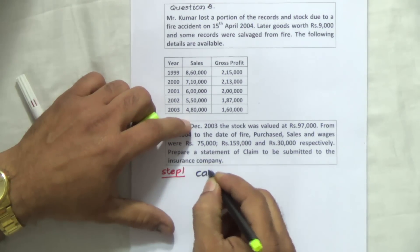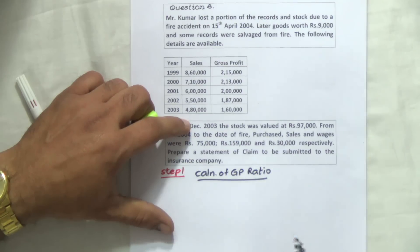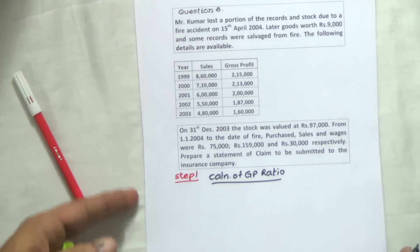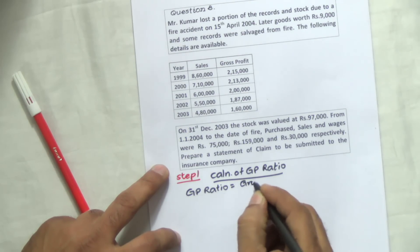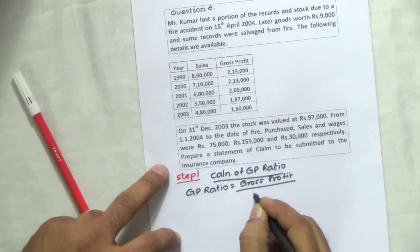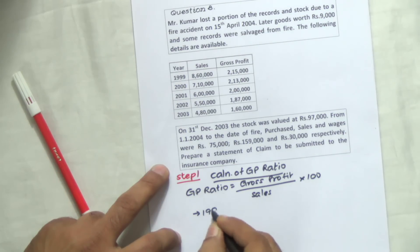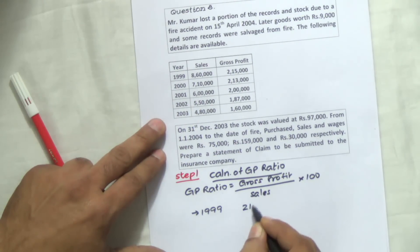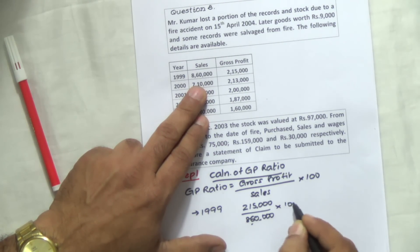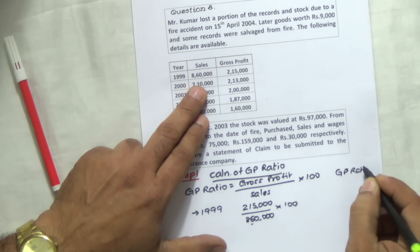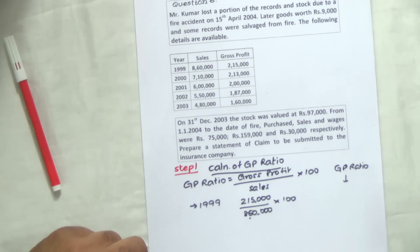Calculation of GP ratio. The formula is: GP ratio = gross profit divided by sales (net sales), into 100. For the year 1999, gross profit is 2,15,000 and sales is 8,60,000, into 100. We'll put down the GP ratios after calculating. Let us note the numbers first and use the calculator at the end.